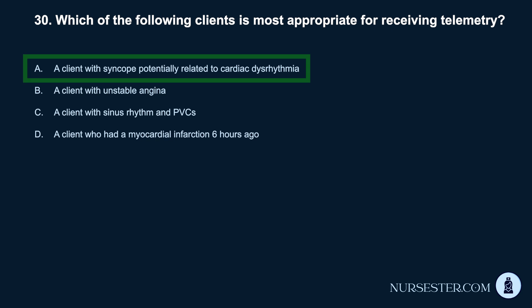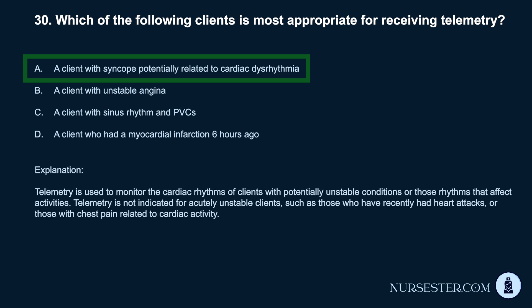Correct answer: A. A client with syncope potentially related to cardiac dysrhythmia. Telemetry is used to monitor the cardiac rhythms of clients with potentially unstable conditions or those rhythms that affect activities. Telemetry is not indicated for acutely unstable clients, such as those who have recently had heart attacks or those with chest pain related to cardiac activity.